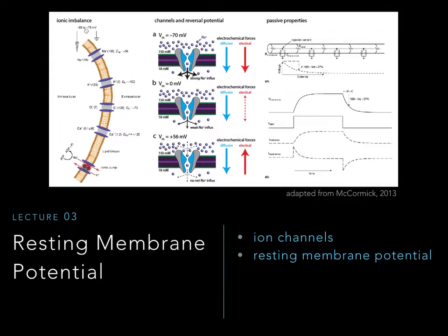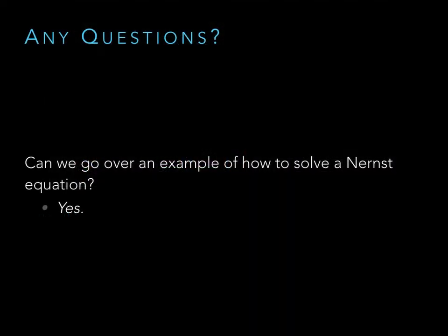This week we're going to be talking about the electrical activity that goes on in neurons. Today it's about the resting membrane potential — in other words, when the neuron isn't doing anything. Thursday, or for you all Friday, we'll be talking about action potentials. Subsequent lectures will talk about neurotransmitter release and the ion channels they affect. Right now we're going to first introduce ion channels and then how leak ion channels create the resting membrane potential.